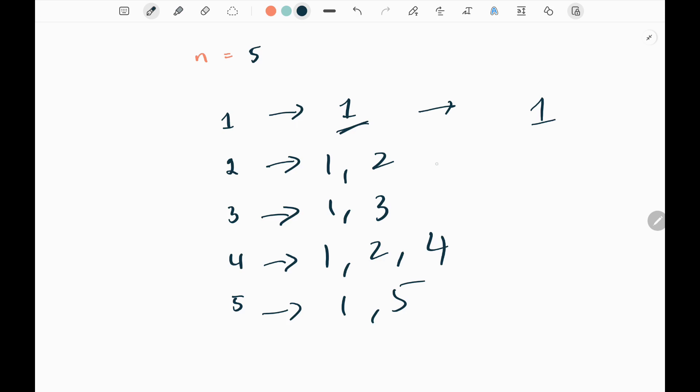For two, there are an even number of factors, so I won't consider it. For three, we have an even number of factors. For four, we have an odd number of factors, so we consider this and increase the count to two. For five, we have an even number of factors. Finally, we return two.